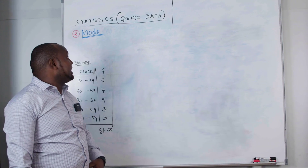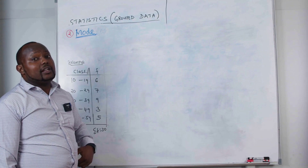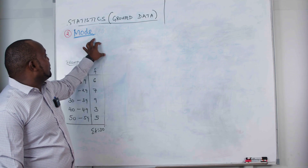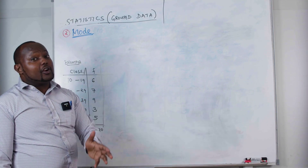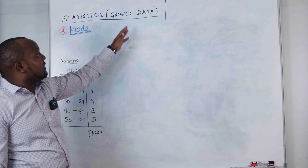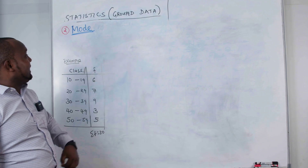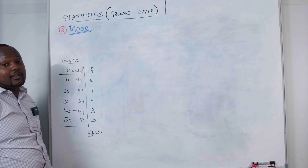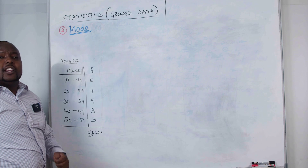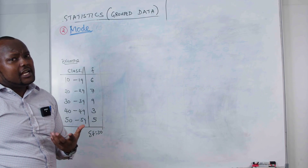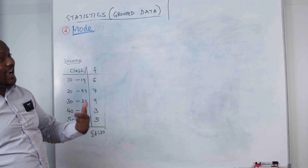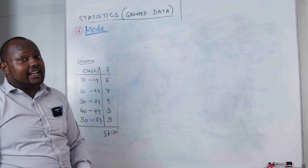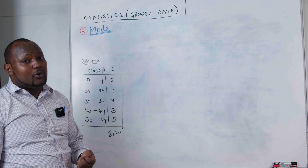In the previous video we looked at the mean, including using assumed mean. Now, how do we calculate the mode? For ungrouped data we covered that in earlier videos, but for grouped data like this example, we need a different approach. Mode is the most occurring number, but since we have already grouped our data, we need a formula.